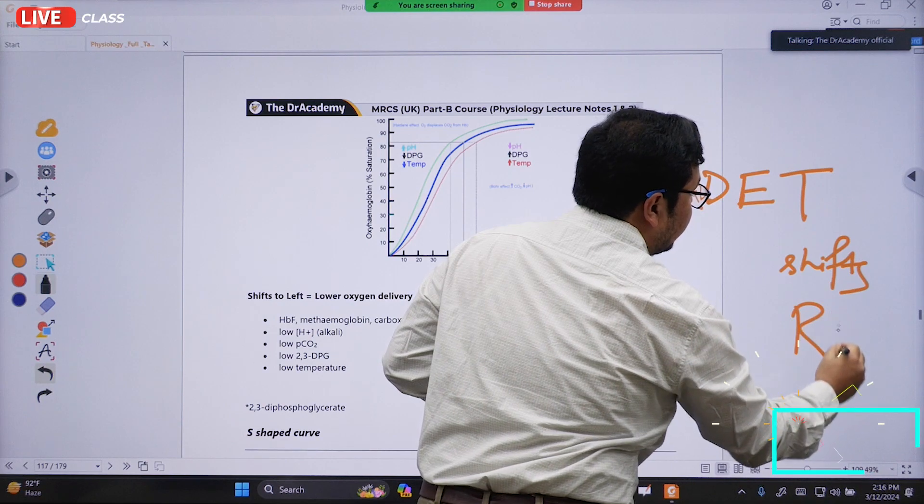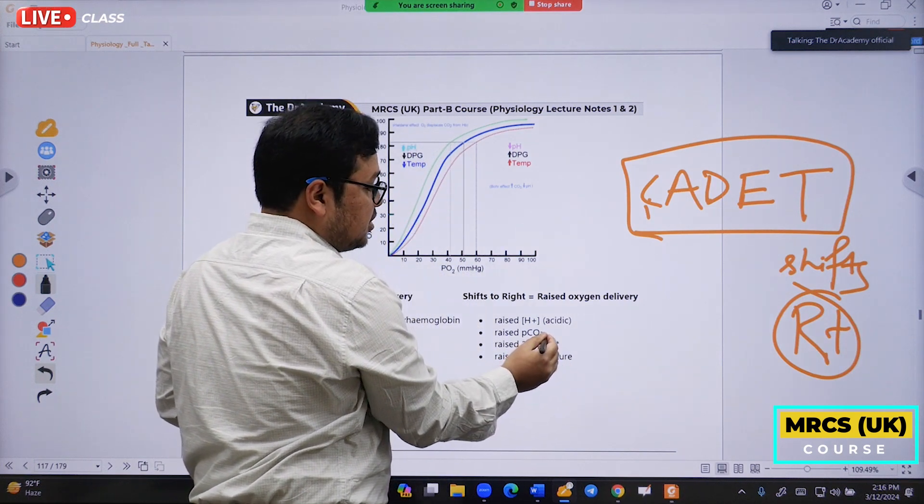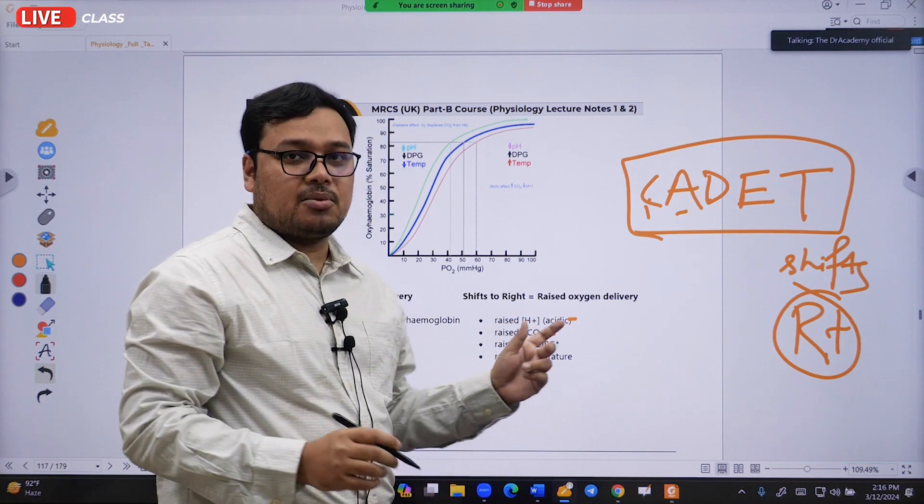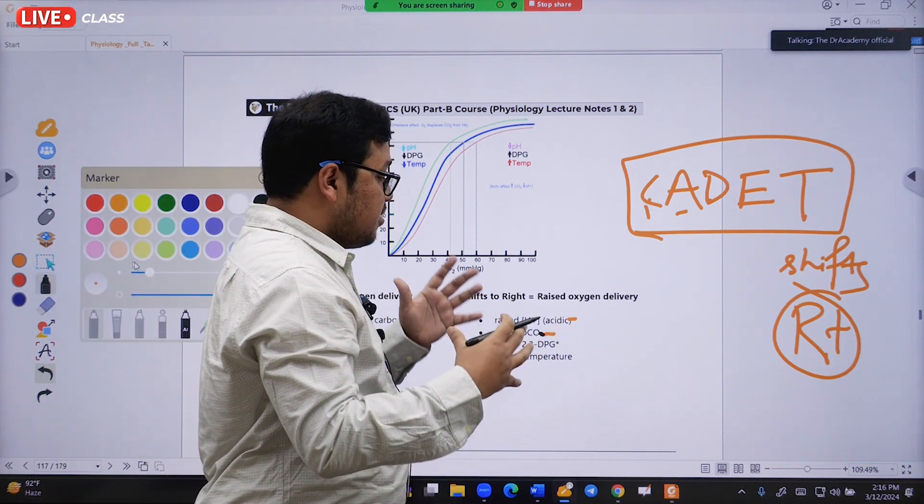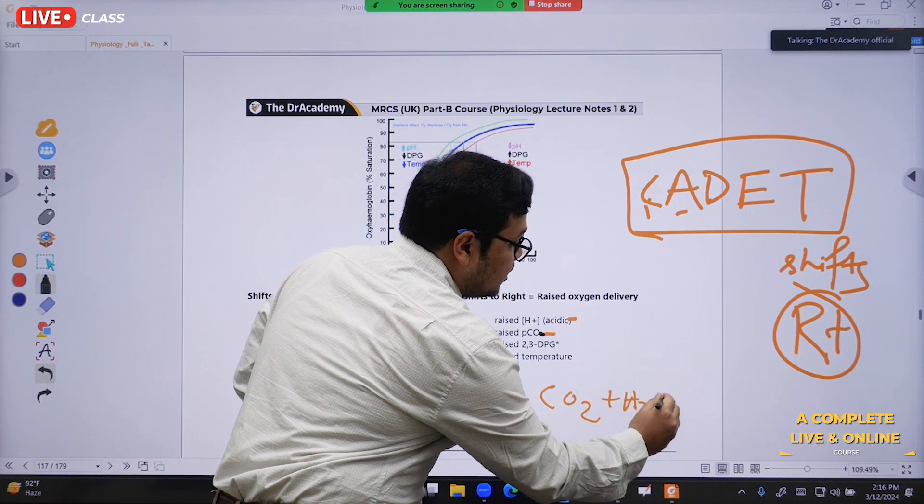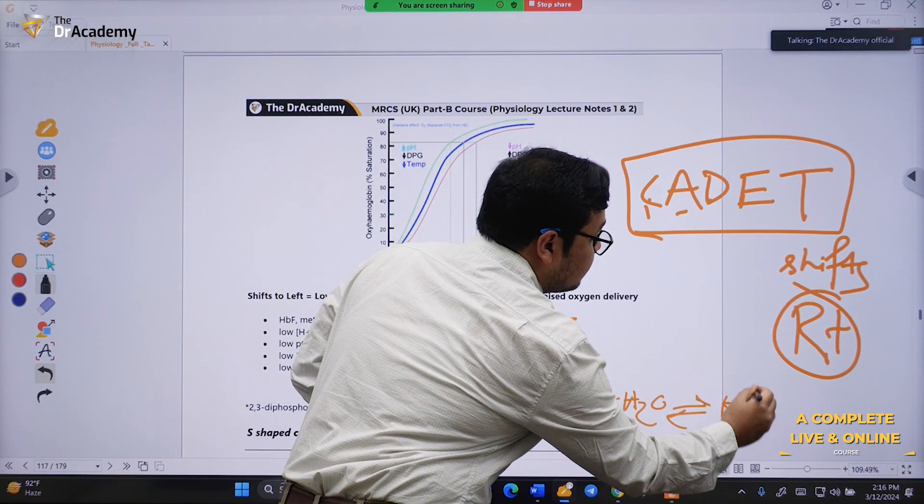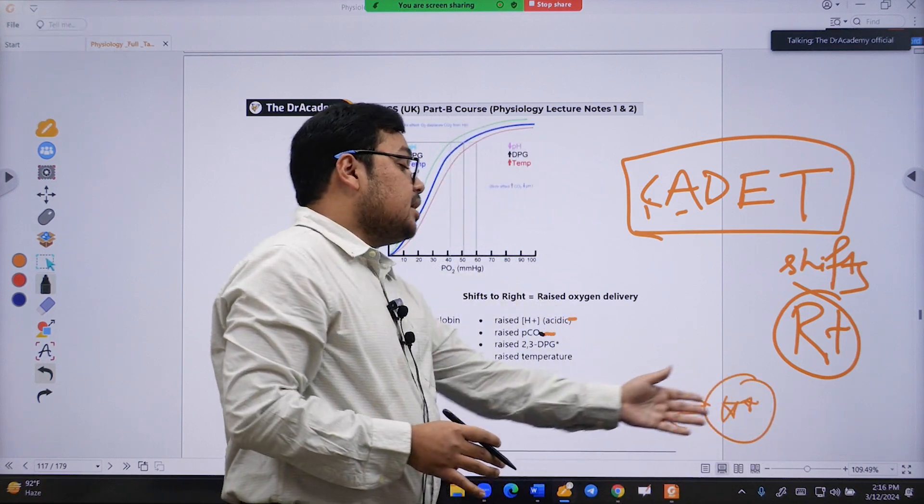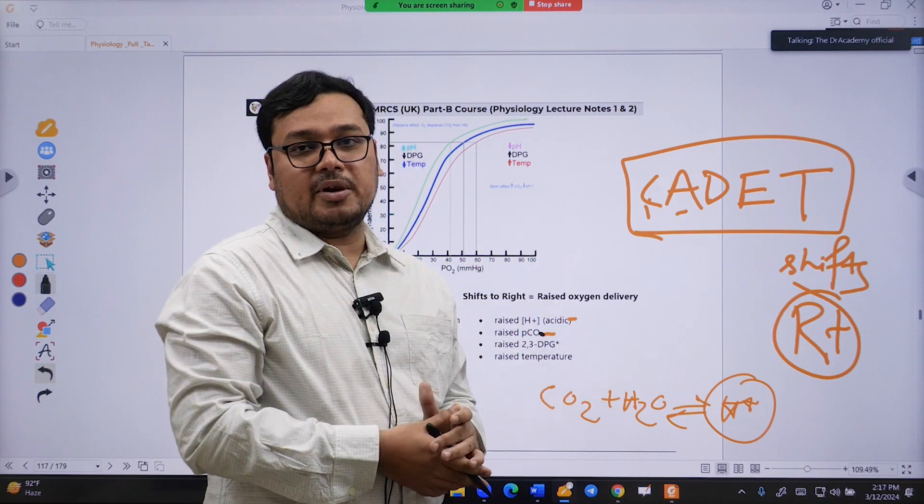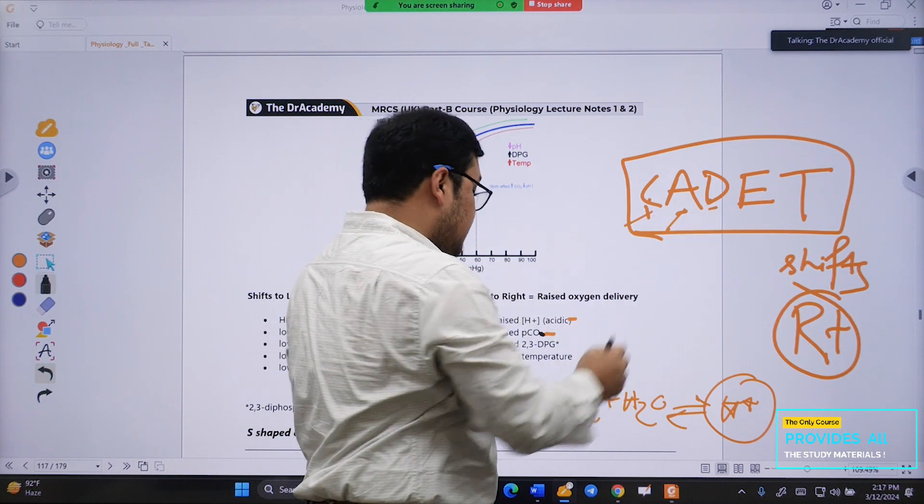CADET is the mnemonic. C stands for partial pressure of carbon dioxide. A stands for acidosis, because when the partial pressure of carbon dioxide arises, it reacts with water. CO2 plus water, through Henderson-Hasselbalch equation with carbonic anhydrase, produces increased bicarbonate and increased hydrogen ion. Increased hydrogen ion means an acidotic environment where pH will be lower. So C for carbon dioxide, A for acidity, D for 2,3-DPG.